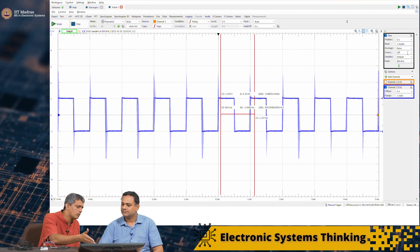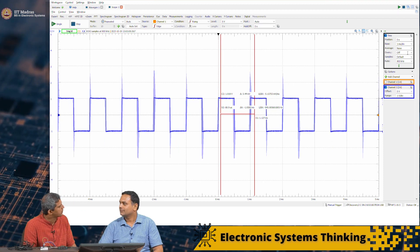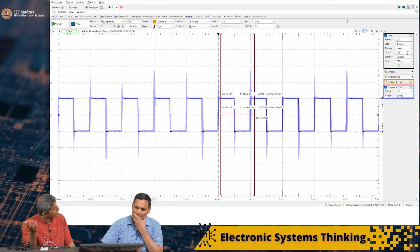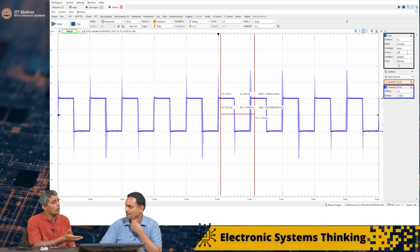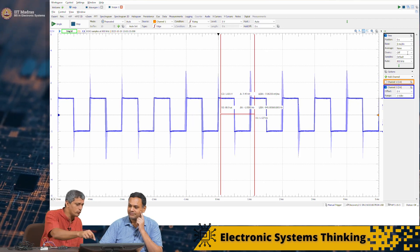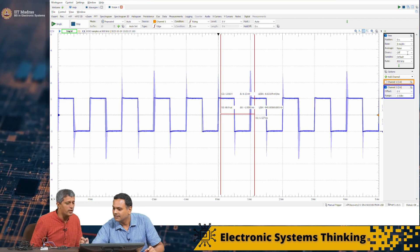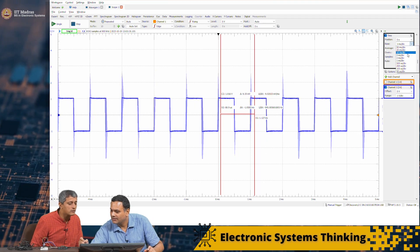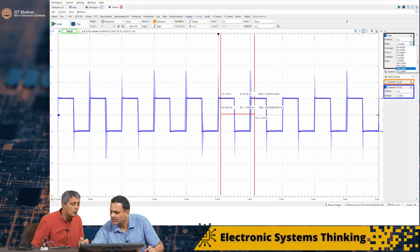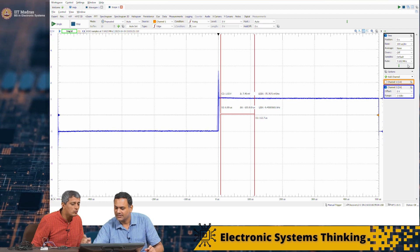Now the question is, where do I sample this output? On the receiver's end, how do I know it is a 1? Because if I sample it in the ringing period...